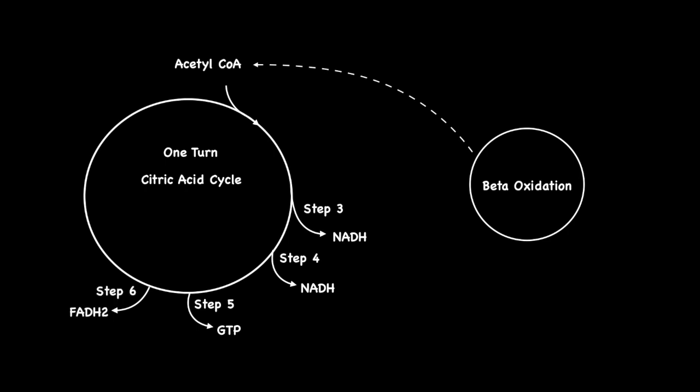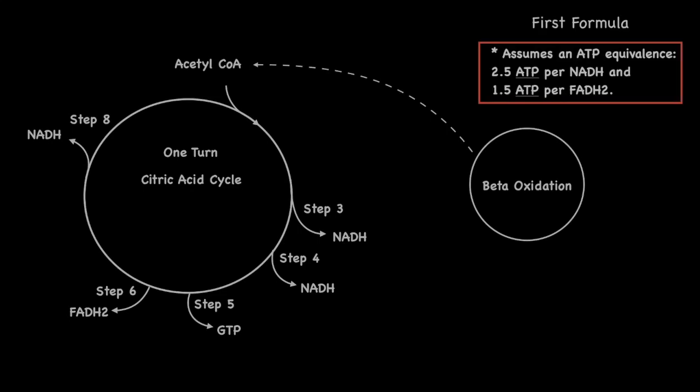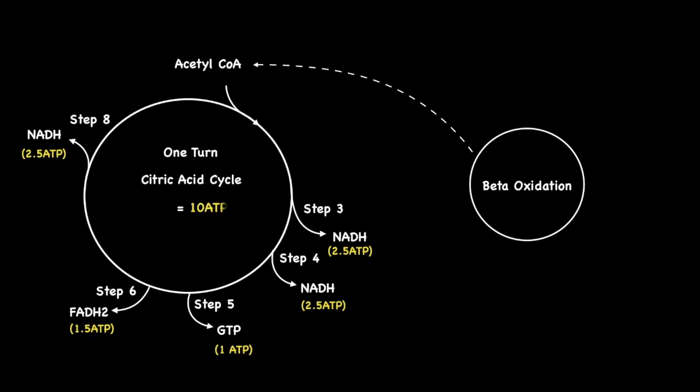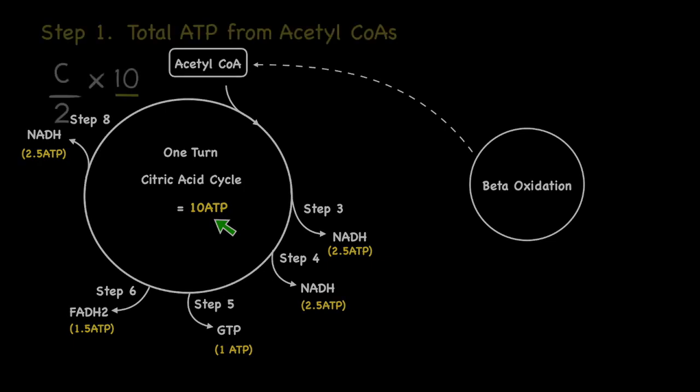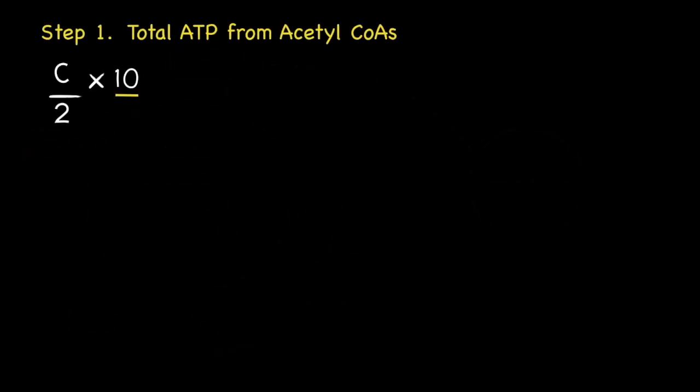If we now add up the ATP equivalents for each of these molecules, 2.5 plus 2.5 plus 1 plus 1.5 plus 2.5, we end up with a total of 10 ATPs per cycle. Or put another way, each acetyl-CoA is equal to 10 ATPs. So that explains where the number 10 comes from.